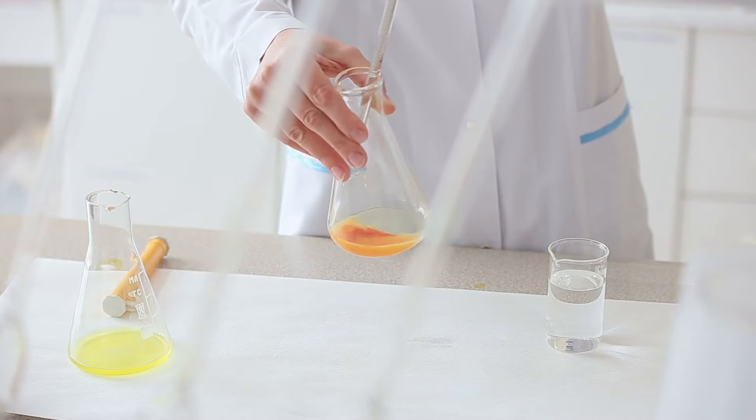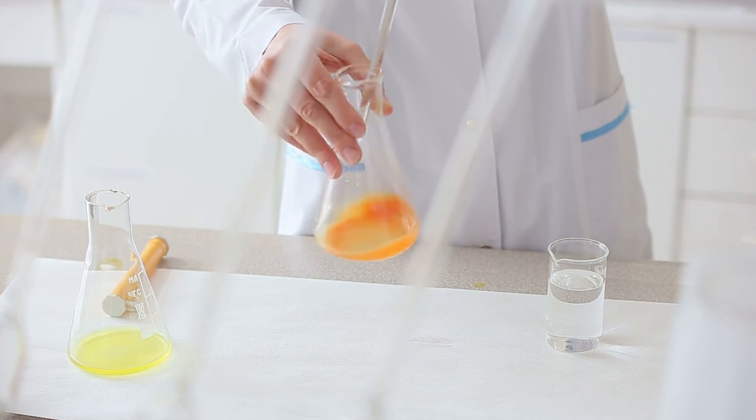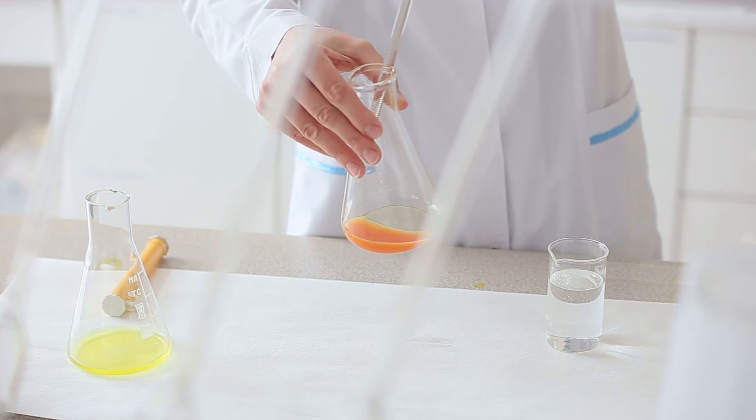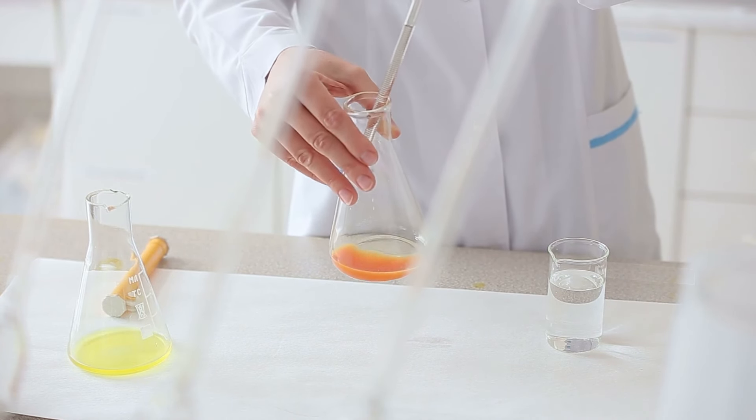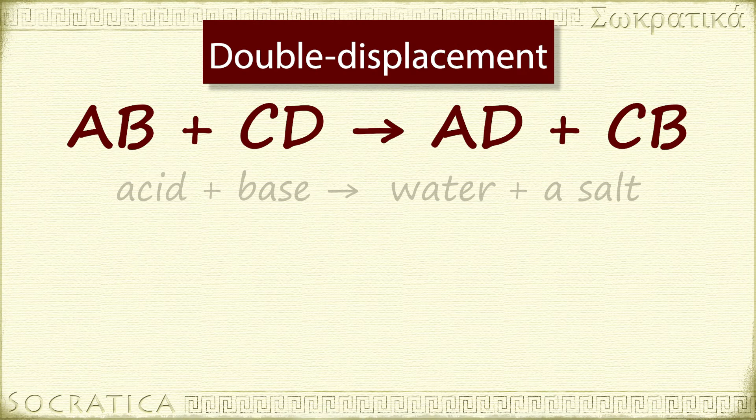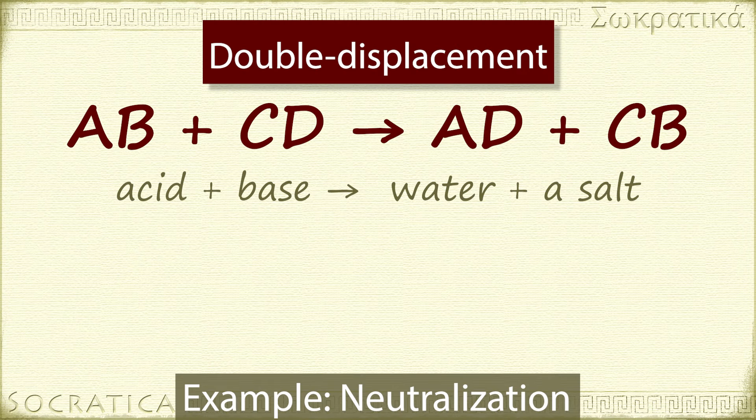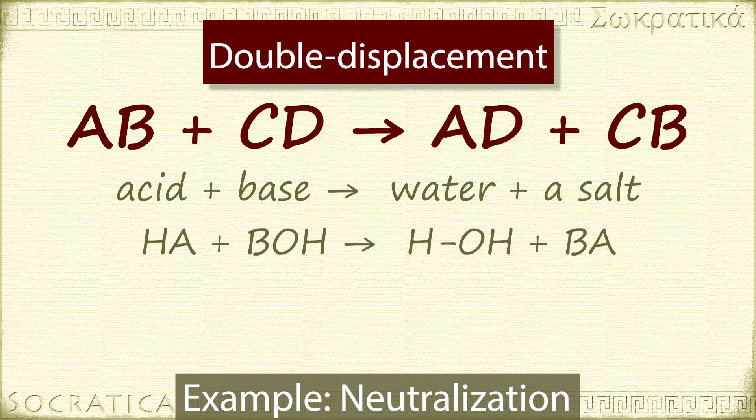Acid base reactions are another kind of double displacement reaction that doesn't form a precipitate. Let's look specifically at neutralization reactions, when an acid and base react to form water and a salt. So the general form is acid plus base yields H2O plus salt. Writing it this way makes it hard to see the double displacement aspect, so here's the more general form of an acid-base reaction. HA plus BOH yields H2O plus BA.